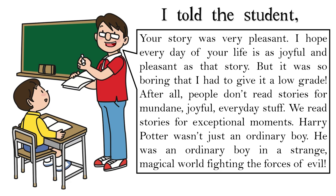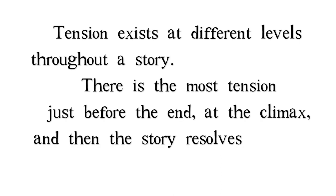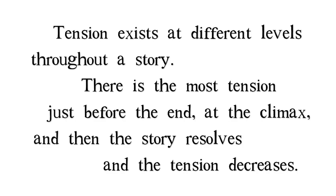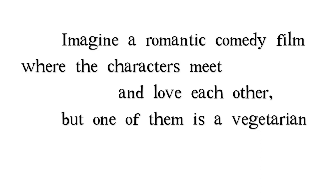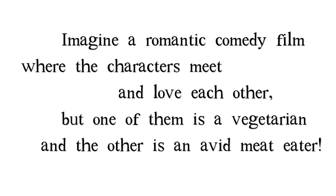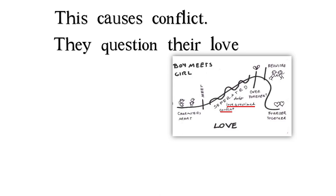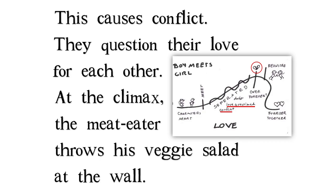Harry Potter wasn't just an ordinary boy. He was an ordinary boy in a strange magical world fighting the forces of evil. Tension exists at different levels throughout a story. There's the most tension just before the end at the climax, and then the story resolves and the tension decreases. Imagine a romantic comedy film where the characters meet and love each other, but one is a vegetarian and the other is an avid meat-eater. This causes conflict. They question their love for each other. At the climax, the meat-eater throws his veggie salad at the wall.